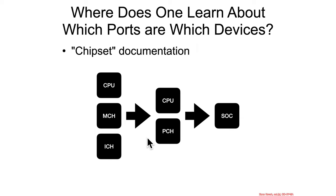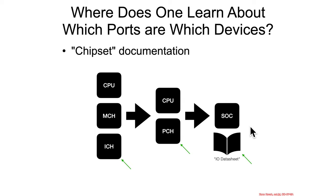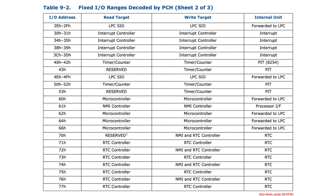Where do you find port I/O documentation in these systems? Back when it was the I/O controller hub, you'd find what ports correspond to what hardware in the I/O controller hub documentation. These days with the platform controller hub you use that documentation, and for SOC-type systems there will be an I/O datasheet. In those documents you'll find big tables of port I/O addresses telling you roughly what each is configured to.